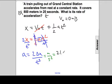2 times the displacement, which is 1,600 meters, divided by the square of the time. 20 squared are 400. That's 20 times 20 seconds squared. 1,600 divided by 400 is 4. 2 times 4 will be 8 meters per second squared. That's the acceleration.